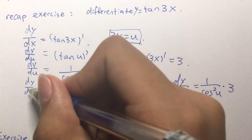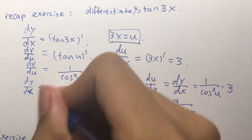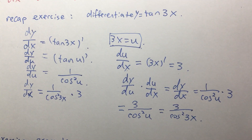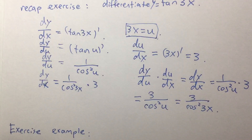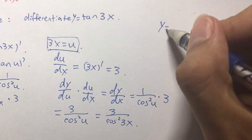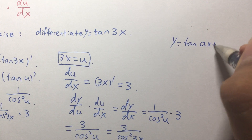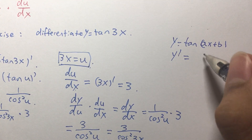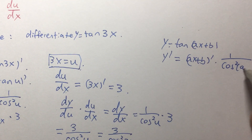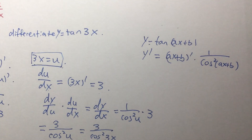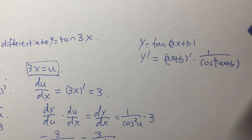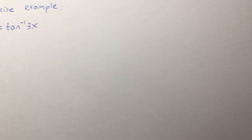So we have dy over dx equals 1 over cosine squared 3x times 3. For the general case, if y equals tangent of (ax + b), then y-dash is equal to a times 1 over cosine squared of (ax + b). That is our general case formula. Now let's try an example.